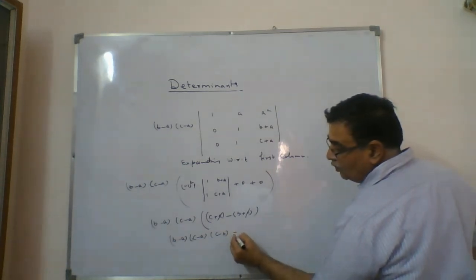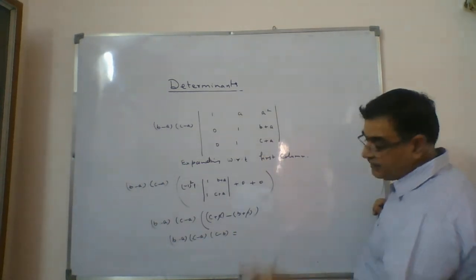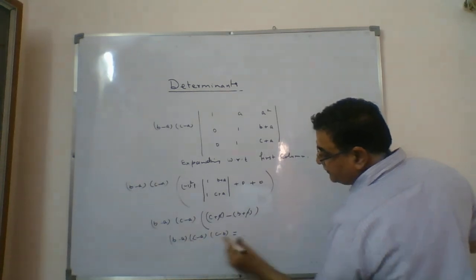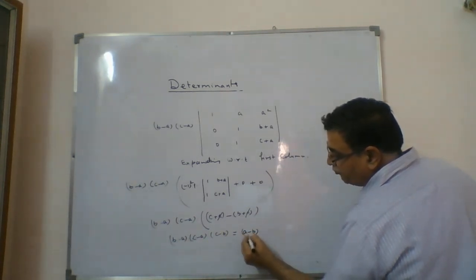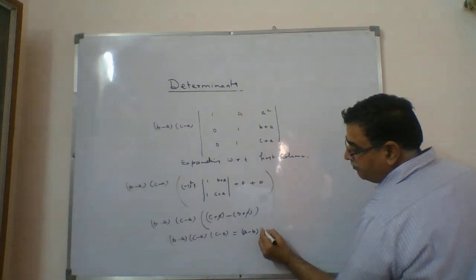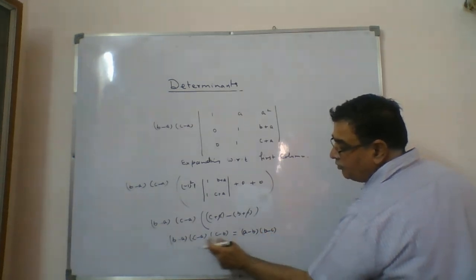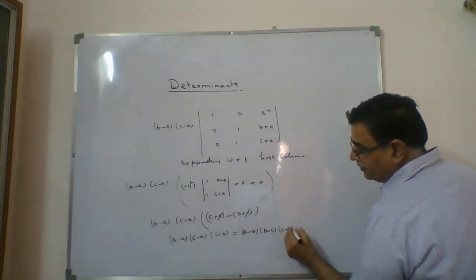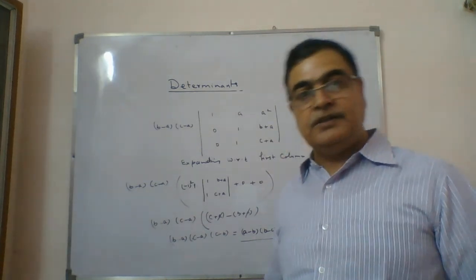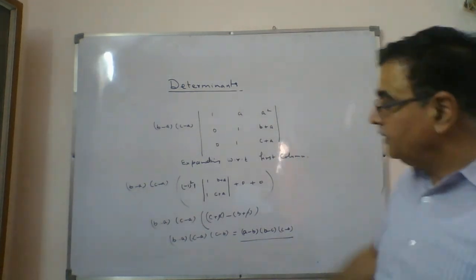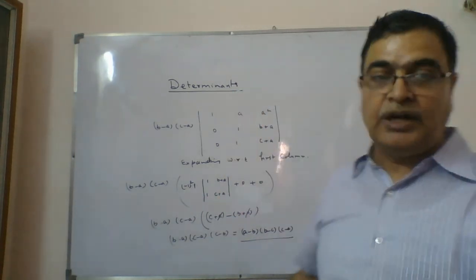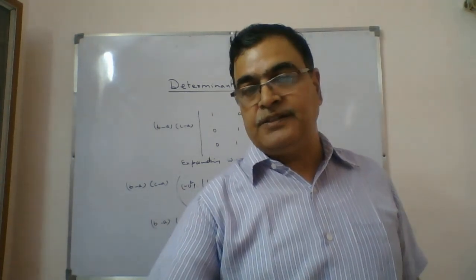Now making the cyclic order: a minus b, then b minus c, then c minus a. We take one minus common to get (b-a) = -(a-b), and another minus for (c-b) = -(b-c), so the final answer is (a-b)(b-c)(c-a). This type of determinant evaluation will continue with more examples next time.